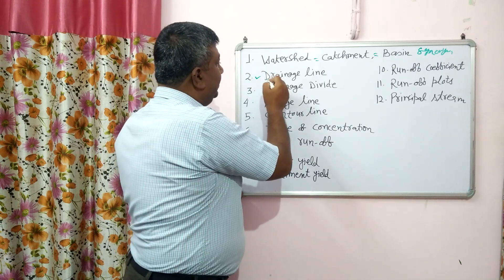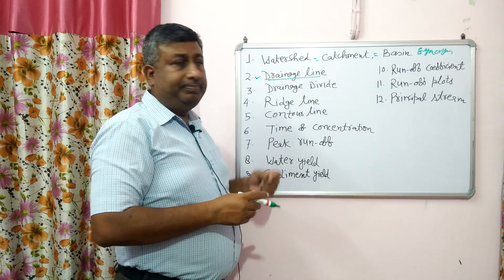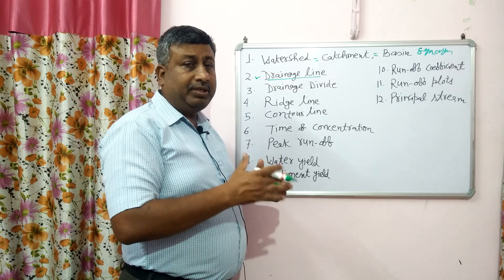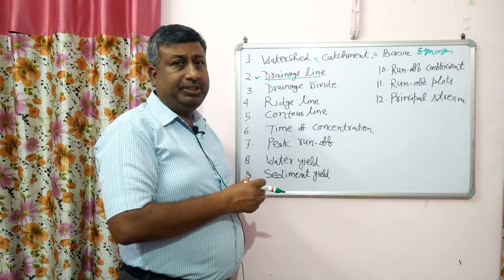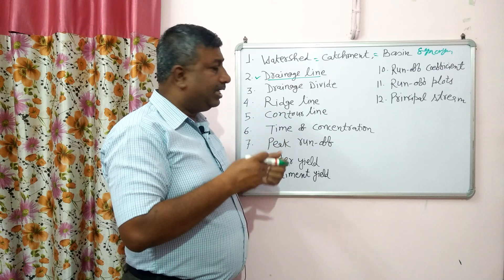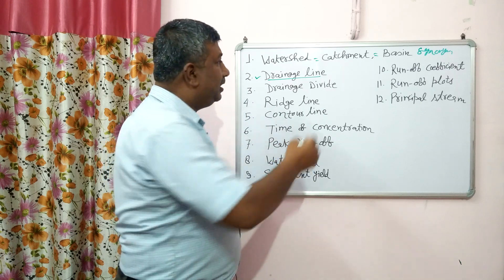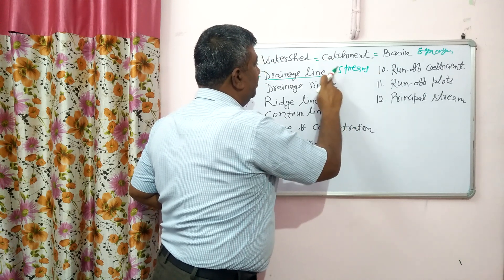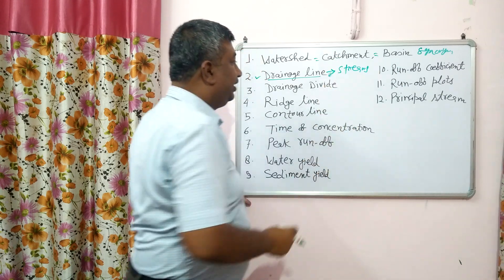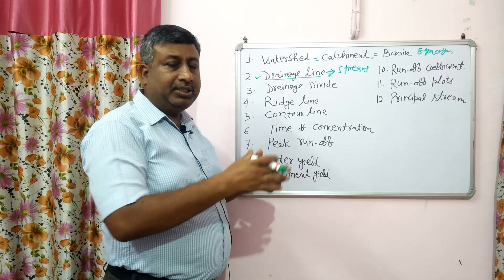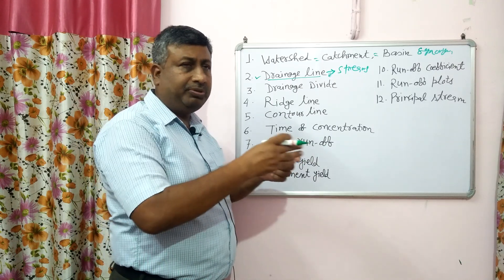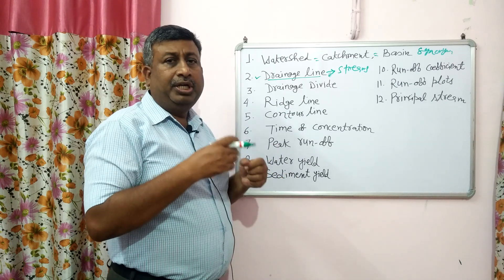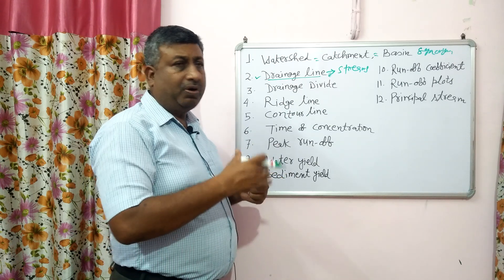Then, drainage line. Drainage line means the path or channel through which drainage occurs — that line is called the drainage line. These are actually the streams which carry runoff water.